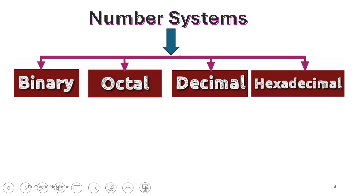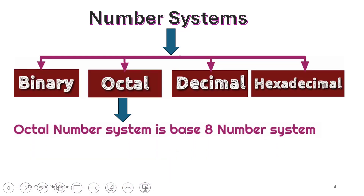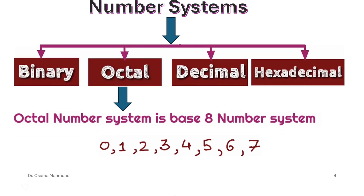The third one is octal. It shares digits with the decimal: 0, 1, 2, 3, 4, 5, 6, 7. So it is similar to the decimal in its values from 0 to 7, and the base here is 8.